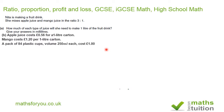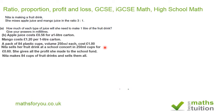Apple juice costs £0.56 for a one-litre carton and mango juice costs £1.20 for a one-litre carton. A pack of 84 plastic cups with a volume of 250 millilitres each costs £1.00. Nita sells her fruit drink at the school concert in 250 millilitre cups for £0.60 each. She gives all the profits to the school fund. Nita makes 84 cups of fruit drink and sells them all.